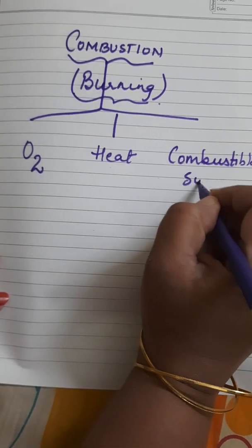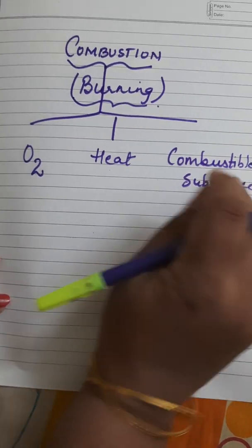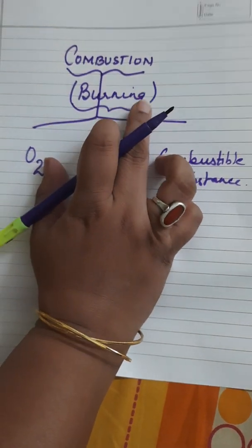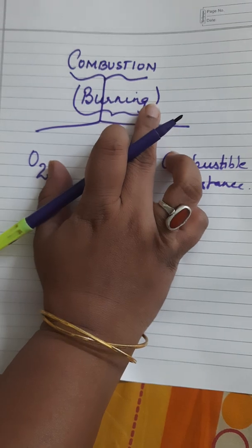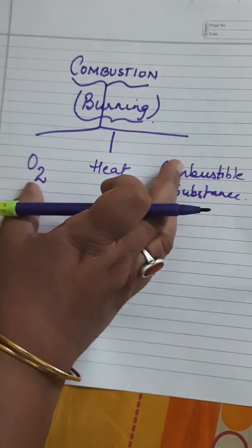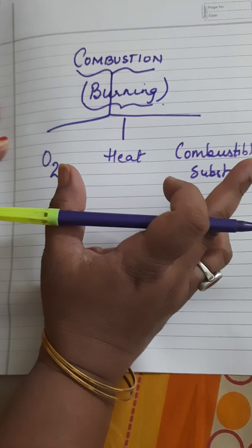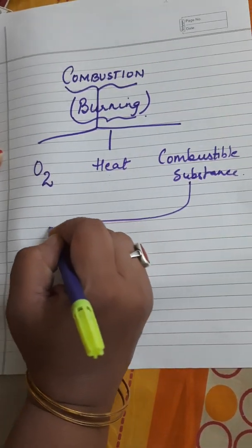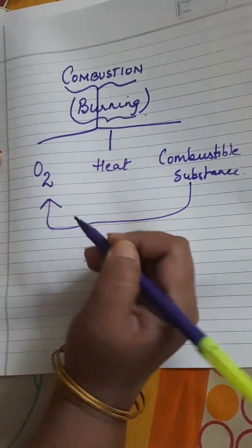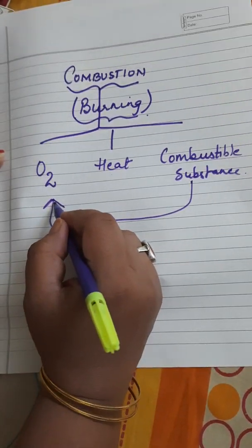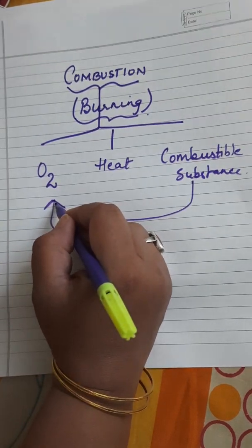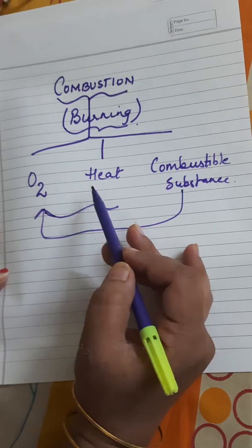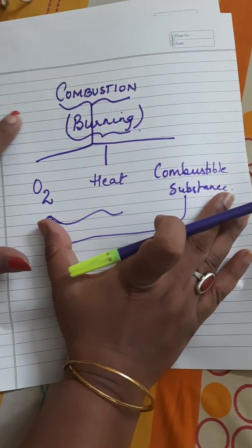What do you understand by combustion? Combustion is a chemical process in which a substance, which is a combustible substance, reacts with oxygen to produce or give off heat. That is known as combustion.